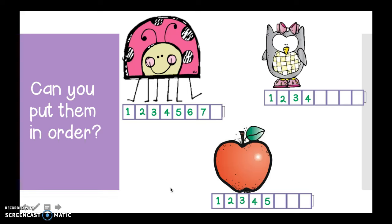Now friend, if you had to put them in order from smallest to longest which one would be the smallest one? Yeah, I agree, the owl. Which one would come next? If we're doing them smallest to largest we'd have the owl then that's right the apple and then finally the ladybug. Excellent job. You're doing great. Let's keep going.